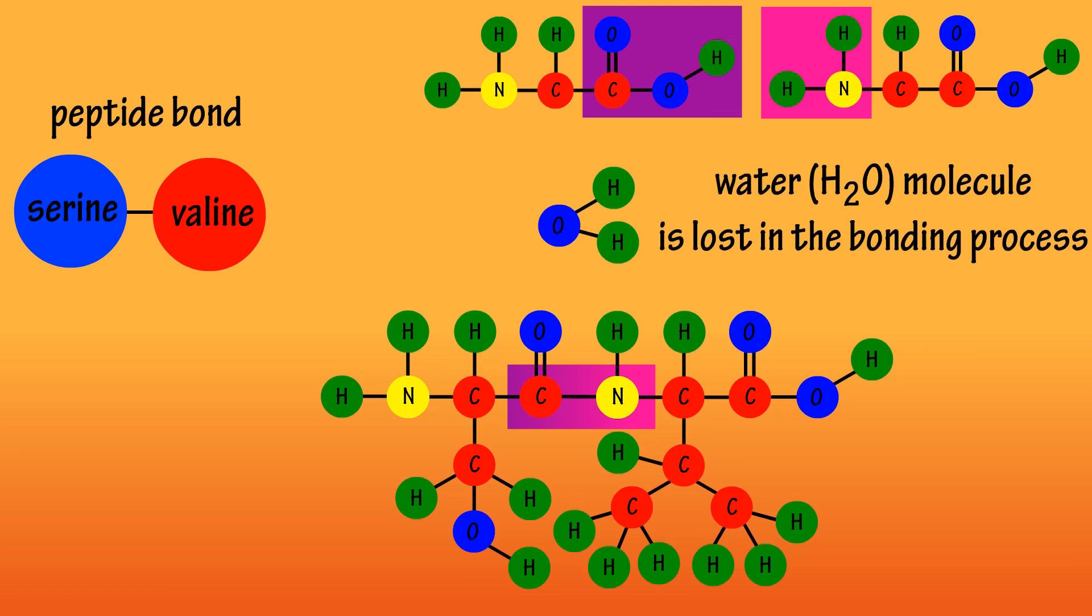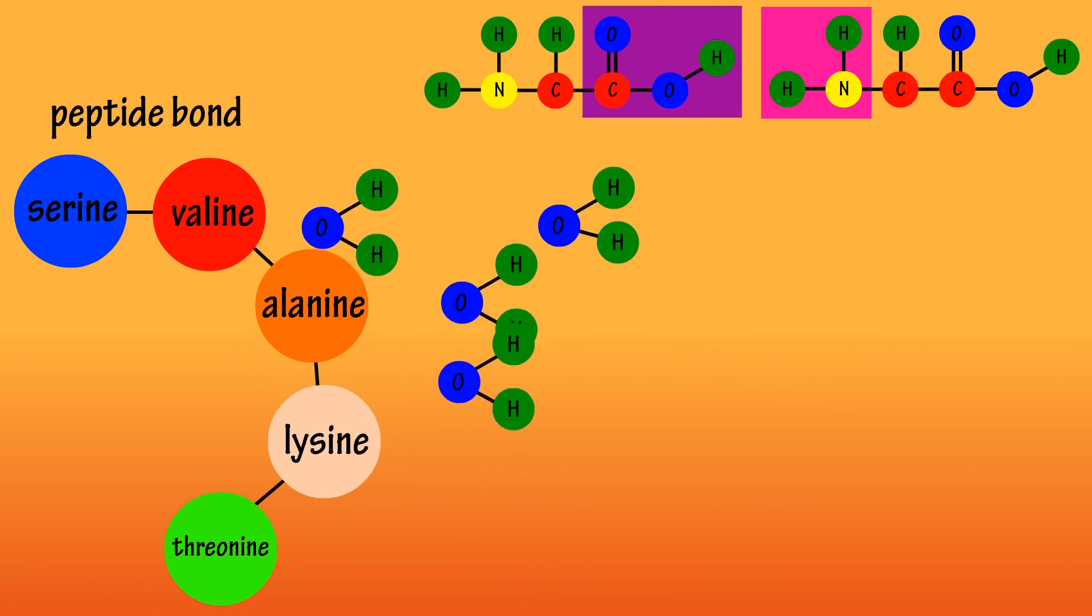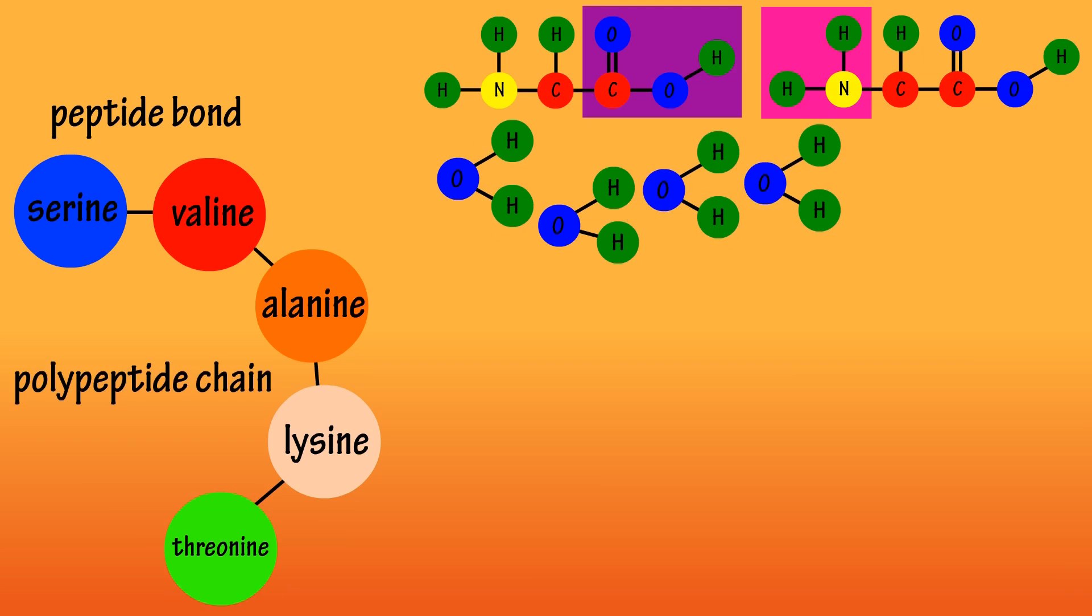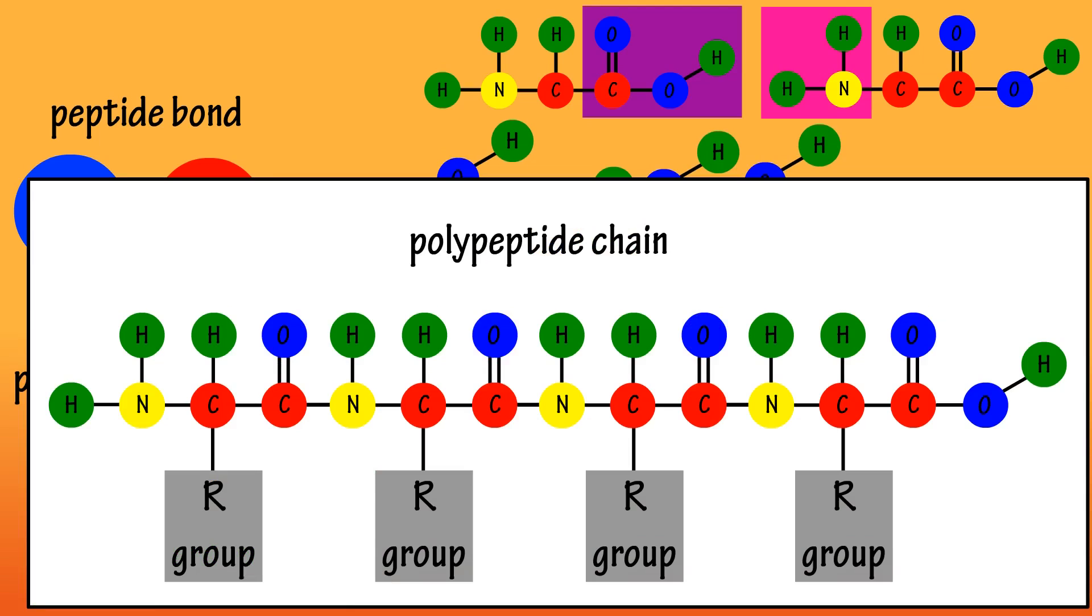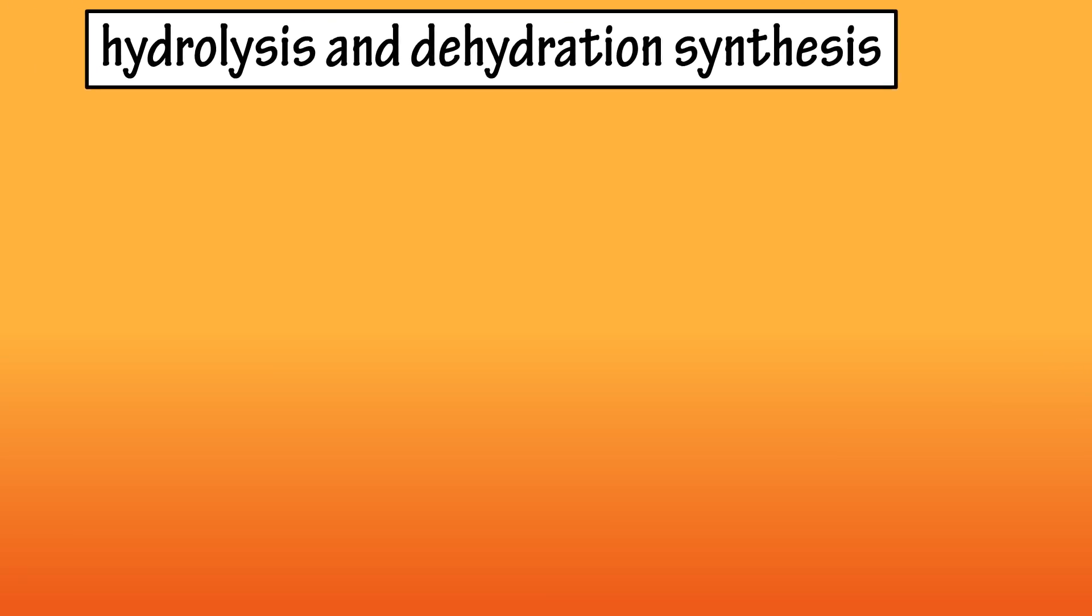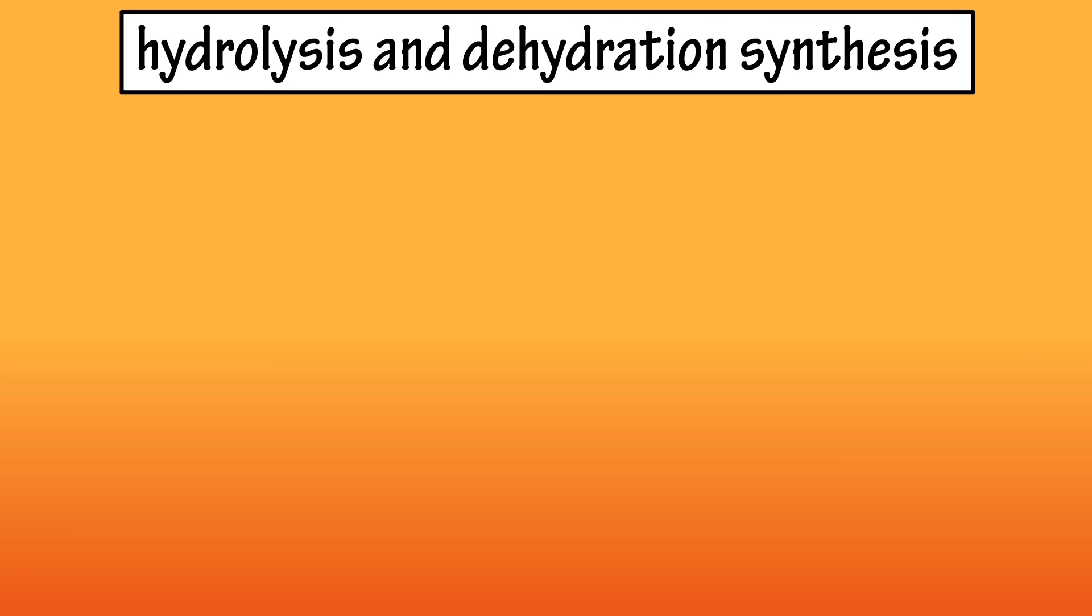More amino acids can link in, again releasing water molecules and form what is called a polypeptide chain, which leads to the production of a protein molecule. And that covers the basics on hydrolysis, dehydration synthesis, catabolism, and anabolism.